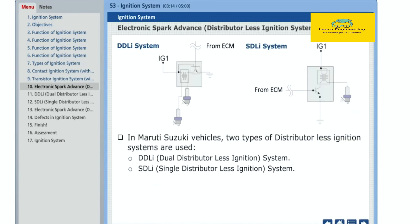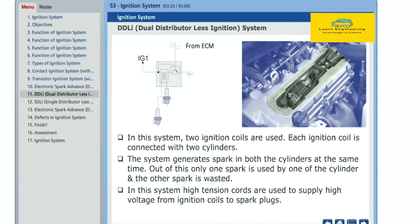In Maruti Suzuki vehicles, two types of distributor-less ignition systems are used. DDLI or dual distributor-less ignition system, and SDLI or single distributor-less ignition system. In this system, two ignition coils are used. Each ignition coil is connected with two cylinders.